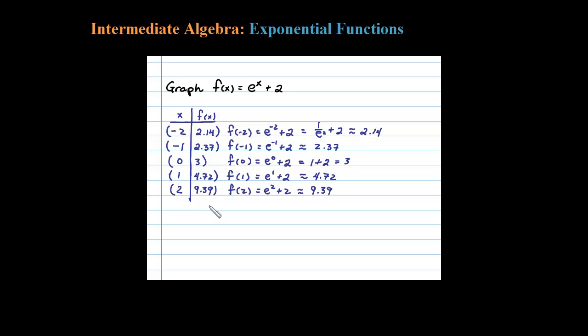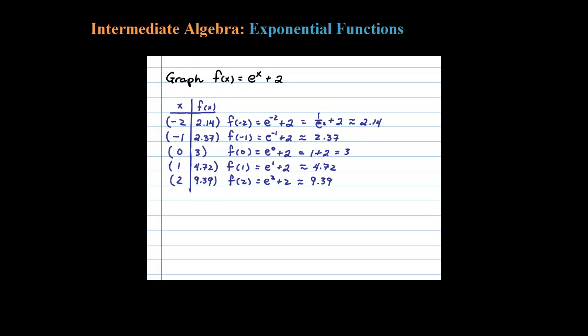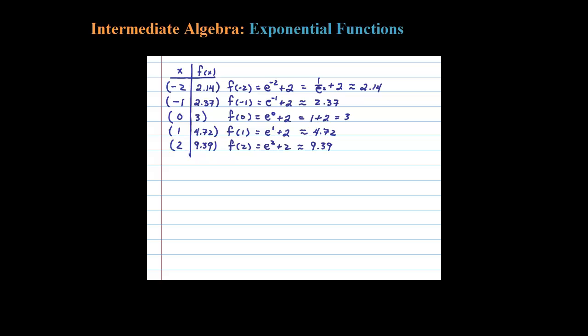Now let's go ahead and plot these points on a Cartesian coordinate system. Now let's remember what we're trying to graph here. The exponential is f of x equals e to the x plus 2. Okay, we have five points here to graph.